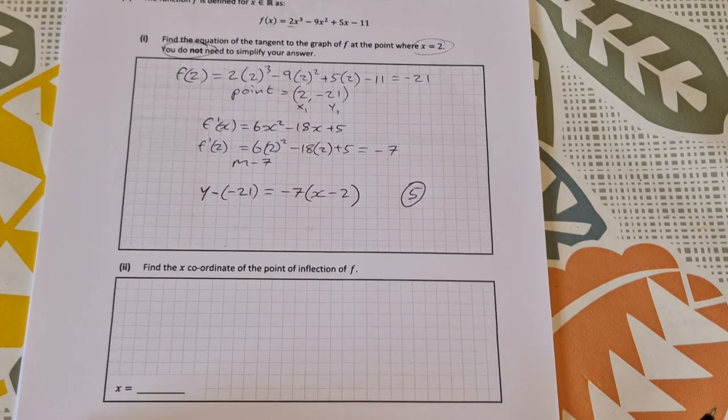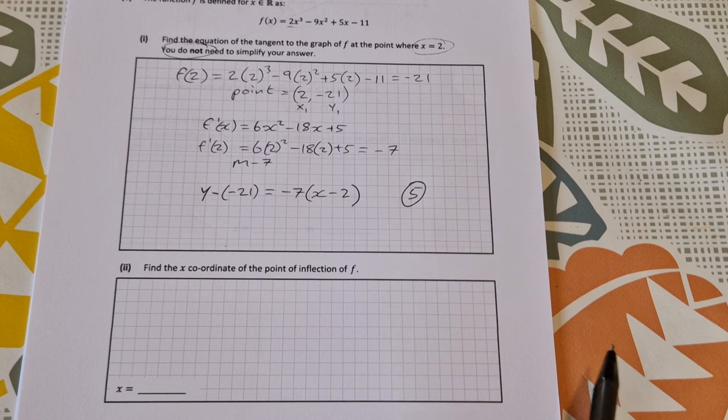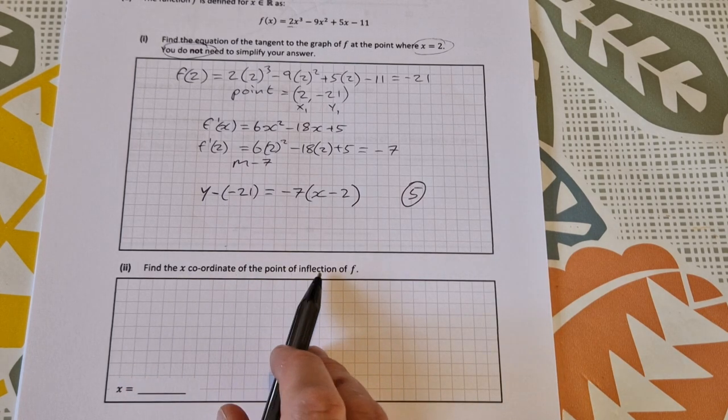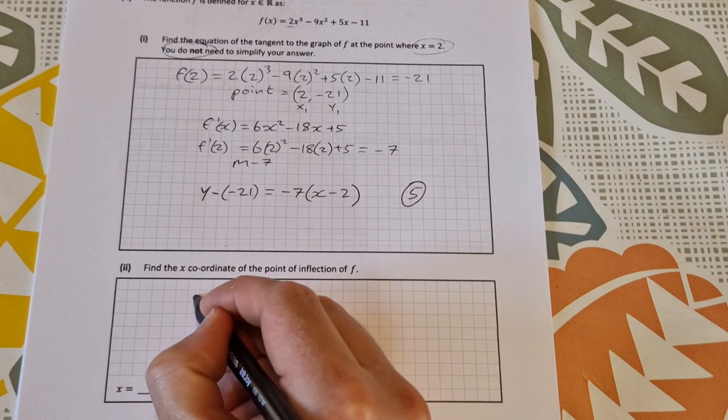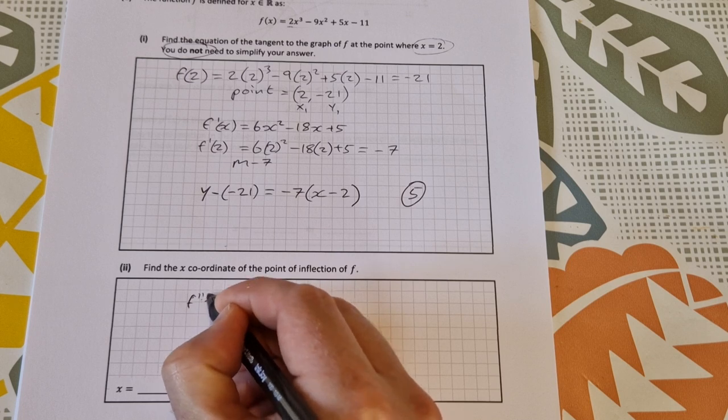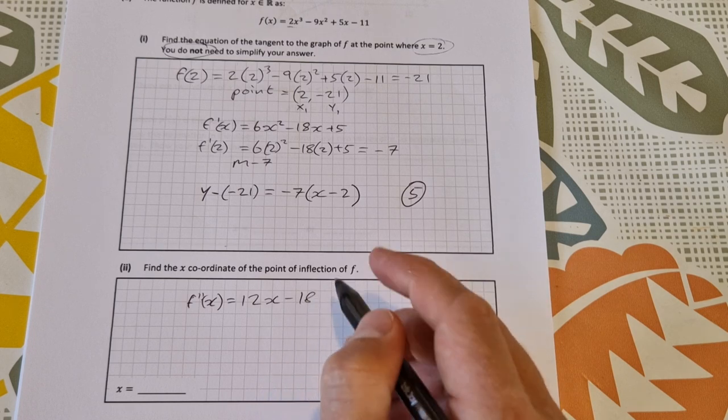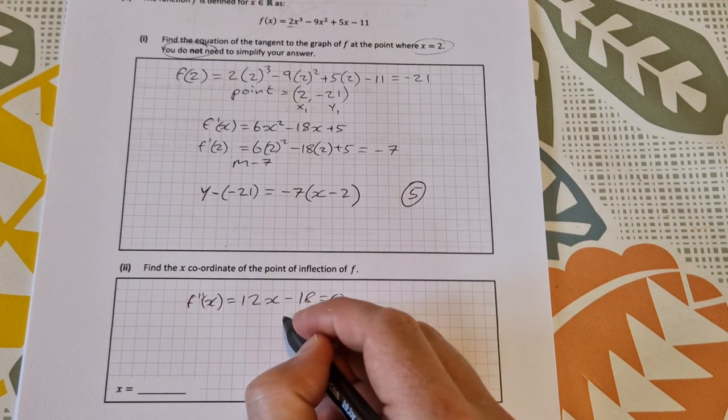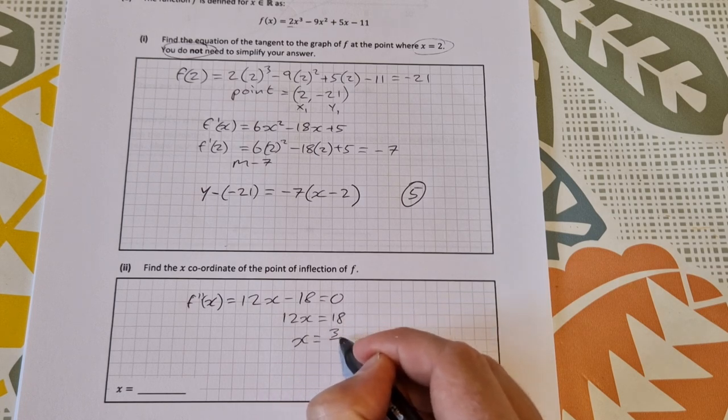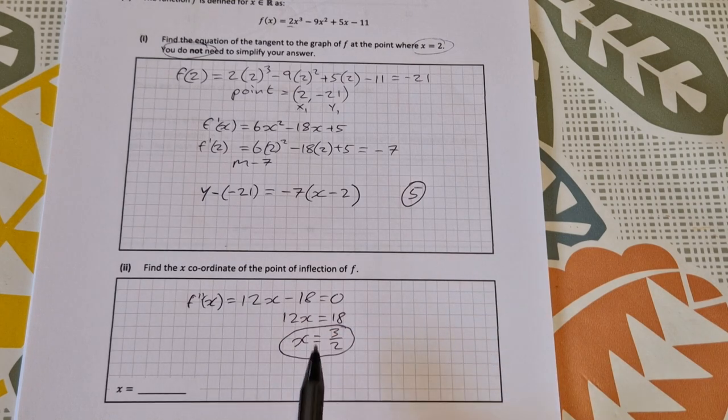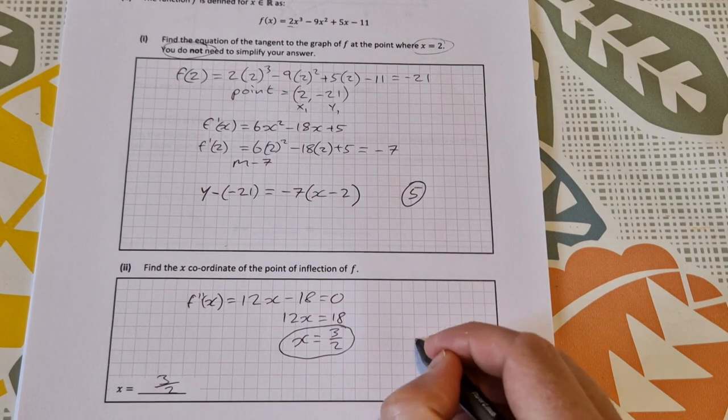There's a second part to part B here: find the x-coordinate of the point of inflection of f. To find the x-coordinate of the point of inflection, we get the second derivative. We already have the first derivative, so we'll do the second derivative: f''(x) equals 12x minus 18. You let that equal to 0 and solve for x. So 12x equals 18, x equals 3/2. So that is the x-coordinate of the point of inflection. That's worth 5 marks as well.